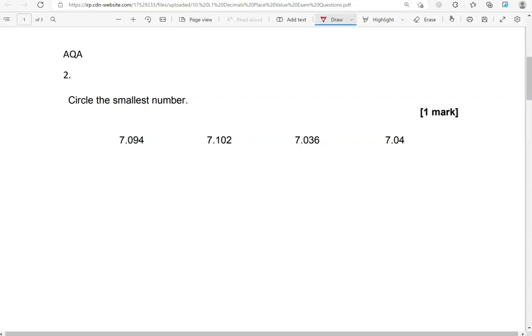So we need to focus on the first digit after the decimal point because before the decimal point, all of them have 7. So 0, 1, 0, 0.